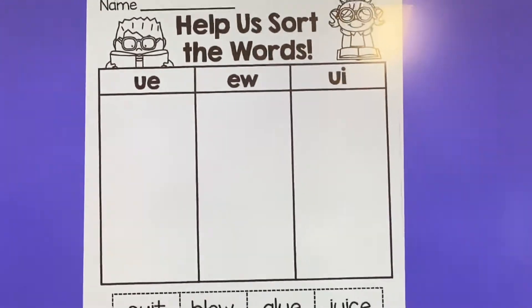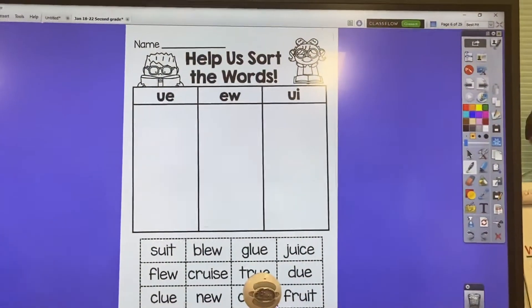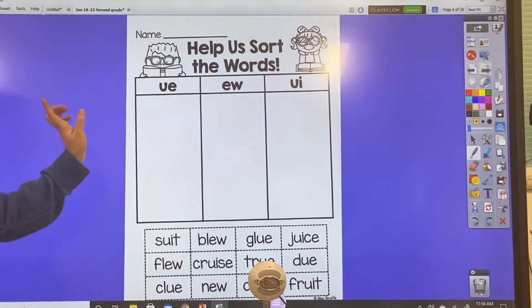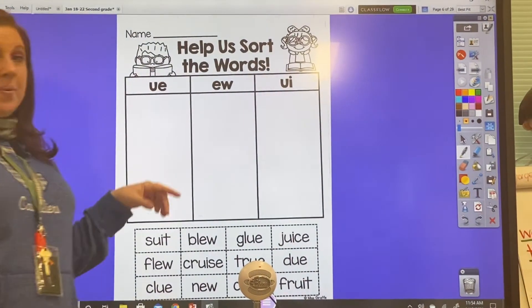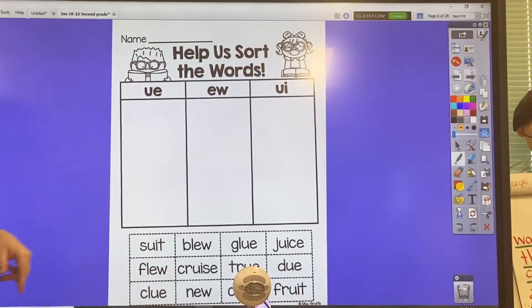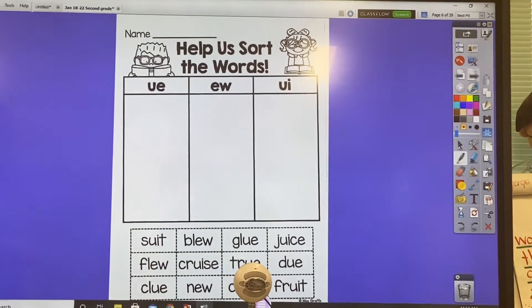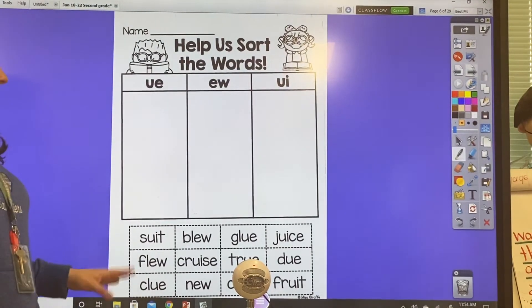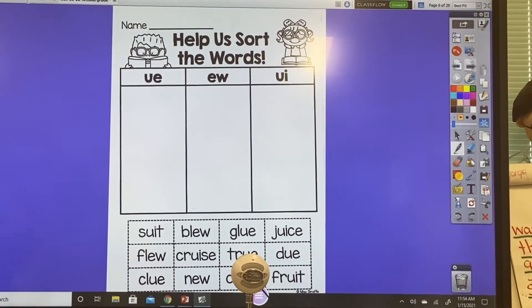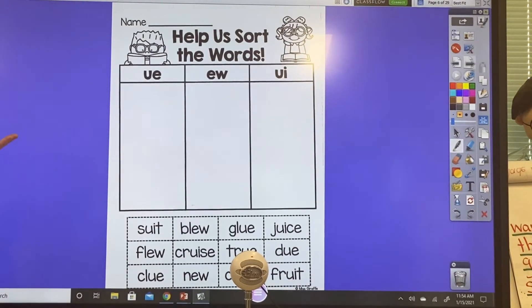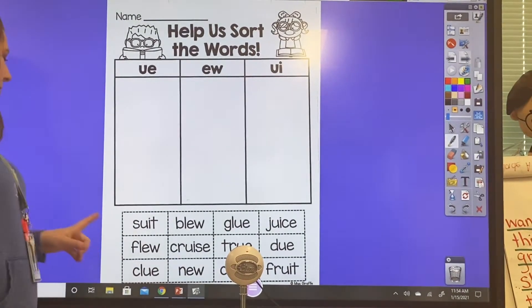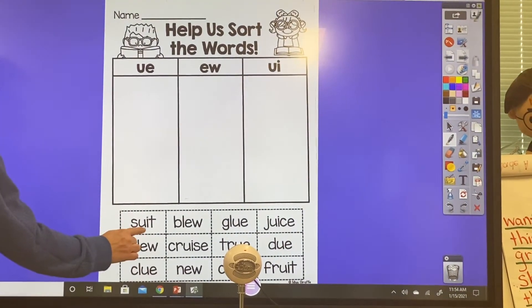On this page, we're reviewing the OO sound. So we have UE, which we worked on last week. We have EW, that we worked on the previous week. And then we add UI. So we're gonna go through and look at the words down here. And this is a sort. Now, if you don't have glue or scissors at home, no worries. I can't cut this out of the board. So I'm just going to write an example in. So let's look at this first word.